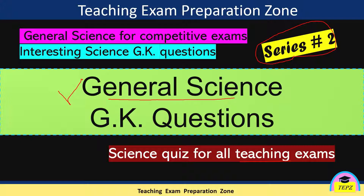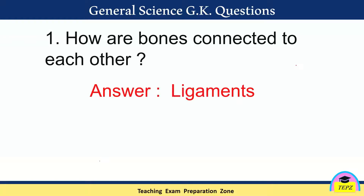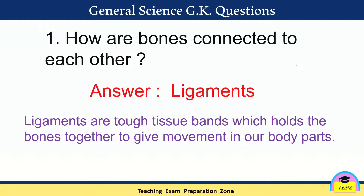First question: how are bones connected to each other? The answer is ligaments. Ligaments are tough tissue bands which hold or connect the bones together so that we can have proper movement in our body parts.